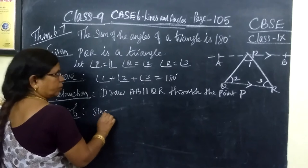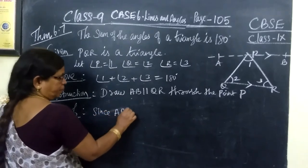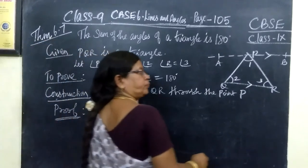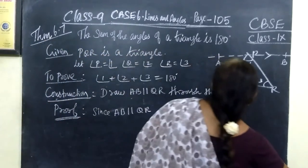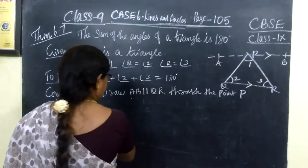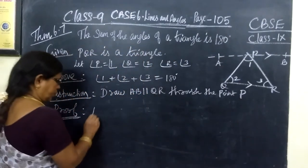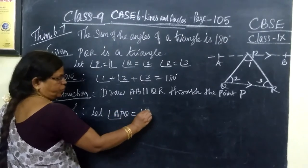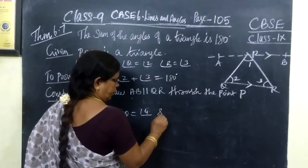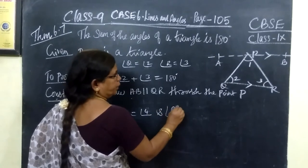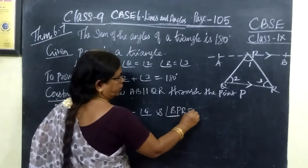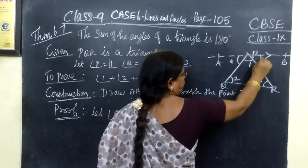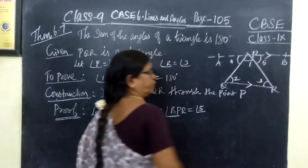Since AB is parallel to QR — before the proof, let angle APQ equal to 4 and angle BPR equal to 5. So this angle is number 4 and this one is number 5.